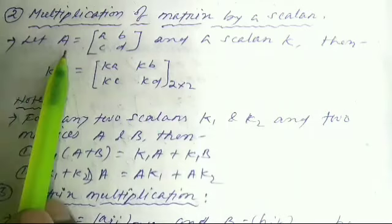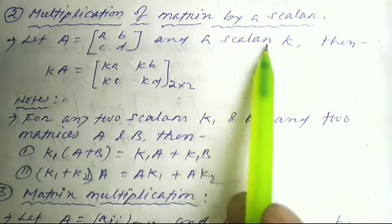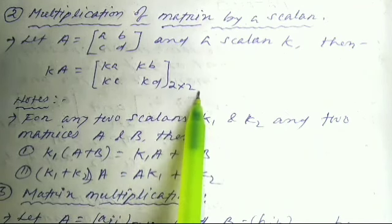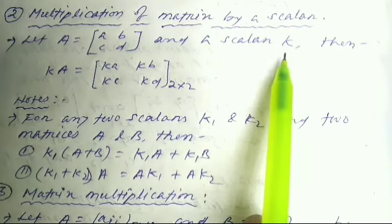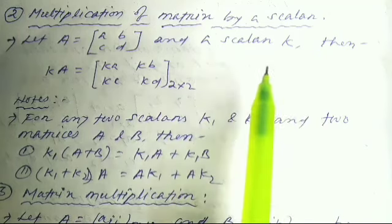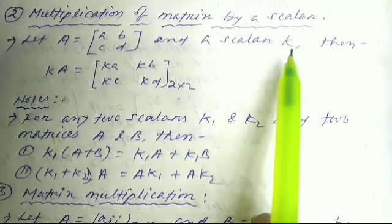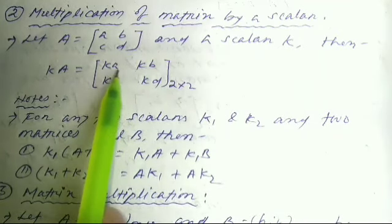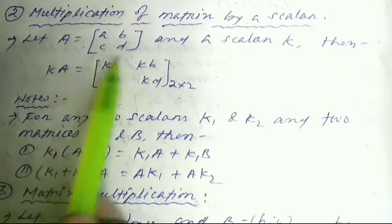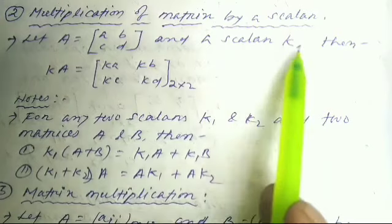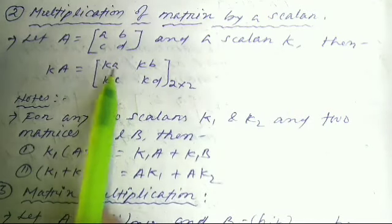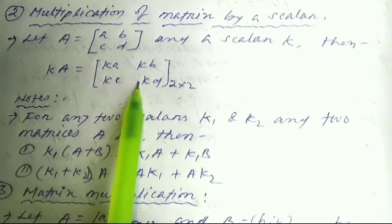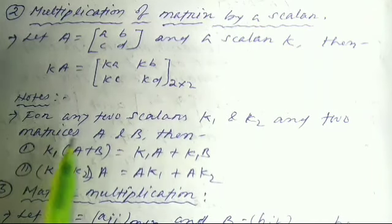Multiplication of a matrix by a scalar: Let A = [a, b; c, d] of order 2×2 and let k be a scalar. Then k·A = [ka, kb; kc, kd], which is of order 2×2. A scalar is a real number or alphabetical constant — when we multiply a matrix by a scalar, all elements are directly multiplied by that scalar.